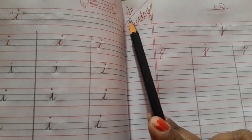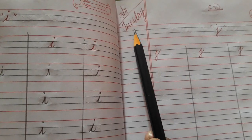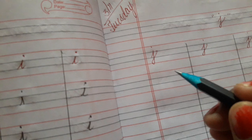Today date is 3rd November. Day Tuesday CW. Class UKG. Let's start writing.